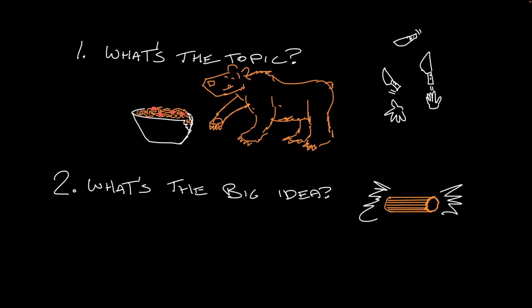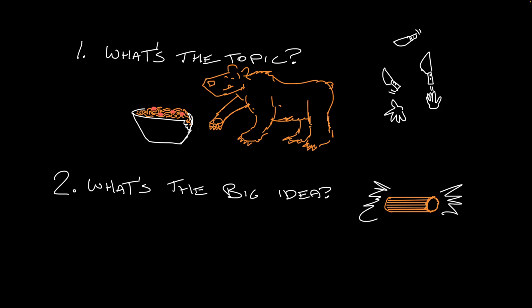But on occasion, you'll come across more than one of those big ideas in a single text. Maybe the first paragraph of the text is about the history of knife juggling, and the second one is about how to juggle knives yourself. Two big ideas. And it's not like one is supporting the other. They're both equally important. And that means that there are two main ideas in that passage.